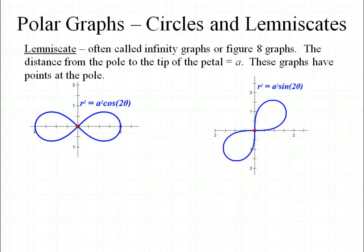The next ones we're going to be talking about are the lemniscates, often called infinity graphs or figure 8 graphs. The equations are r squared equals a squared cosine of 2 theta, or r squared equals a squared sine of 2 theta. For both of these, the distance from the pole to the tip of the petal is a, and both graphs will have points at the pole.